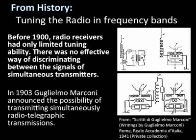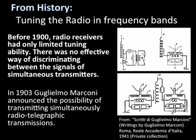The first radio signal transmitted and received by Guglielmo Marconi on the 8th of December 1895 started the wireless communication revolution in our modern world. Before 1900, radio receivers had only limited tuning ability, and there was no effective way of discriminating between the signals of simultaneous transmitters. In 1903, Guglielmo Marconi announced the possibility of transmitting simultaneous radiotelegraphic transmissions by dividing the electromagnetic spectrum into bands.